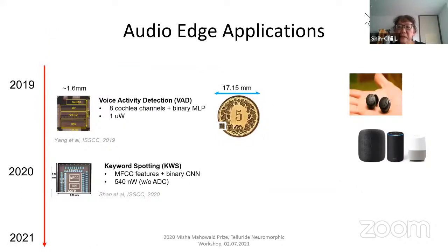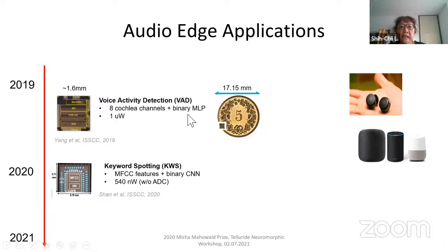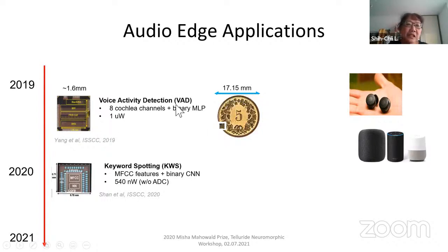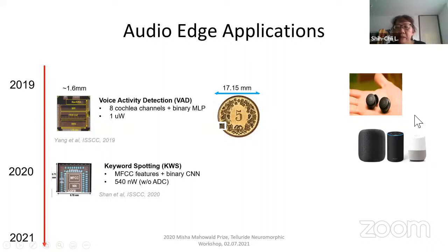Cheng Gao developed the system to show proof of concept — the cochlear board going to an FPGA that runs the delta RNN. Once we knew the system was working, we could shrink everything into an ASIC. Here's an example: a voice activity detection ASIC presented by Minhao at ISSCC in 2019. It has only eight cochlear channels and on the same ASIC a binary MLP — multilayer perceptron — and the whole thing burns only one microwatt. The chip is extremely small; if you take a five-cent Swiss coin at 17 millimeters, this chip is only about one-tenth of that area, showing how small and low-power you can make it — suitable for something like earbuds, which burn about 10 milliwatts just for computation.